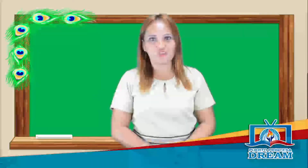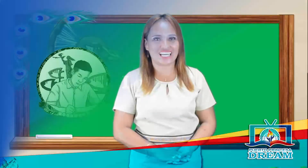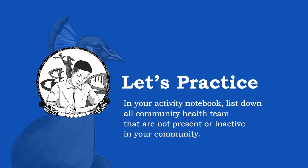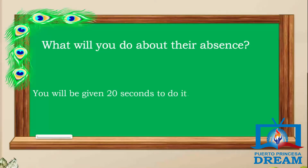Let's check if you have gained understanding of the lessons we have discussed. In your activity notebook, please list all community health characteristics that are not present or inactive in your community. Also note what you would do about their absence. You will be given 20 seconds. Your time starts now.